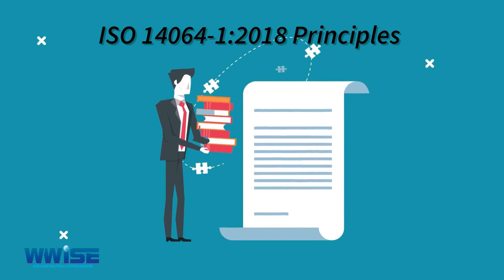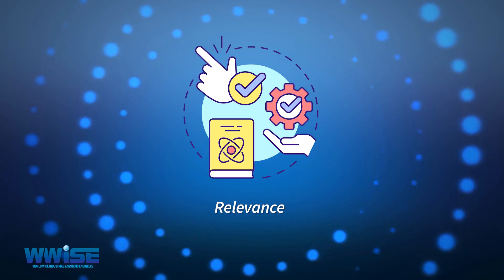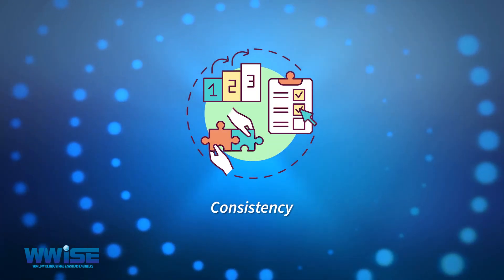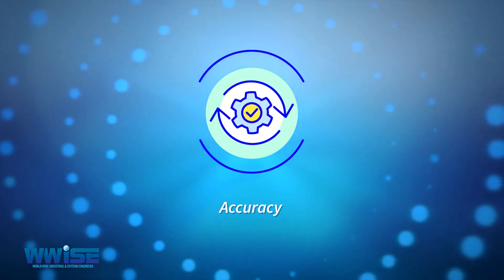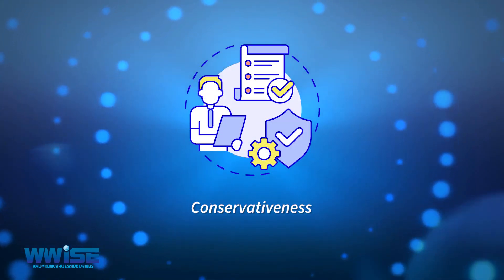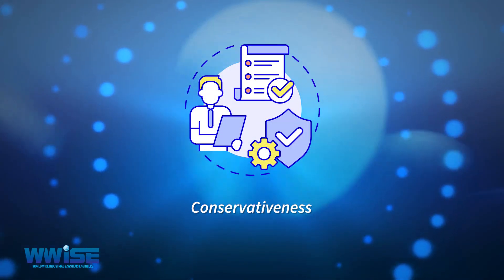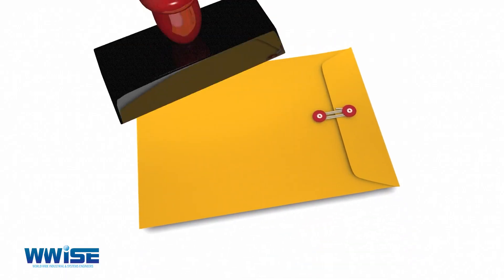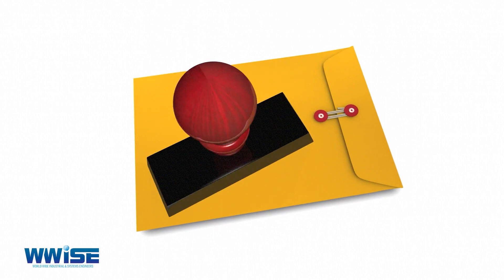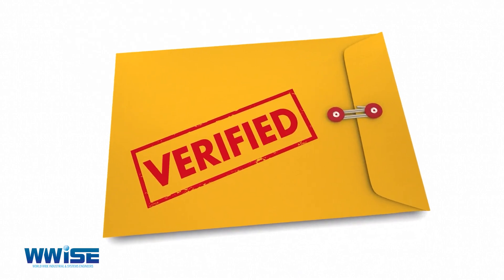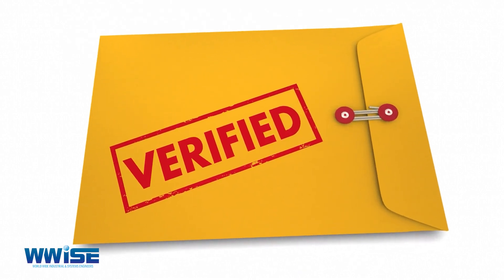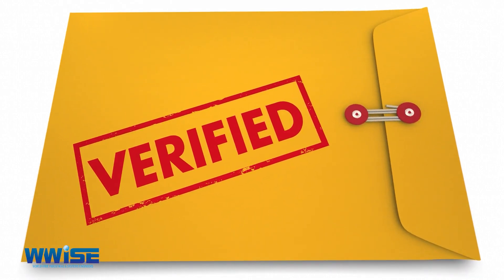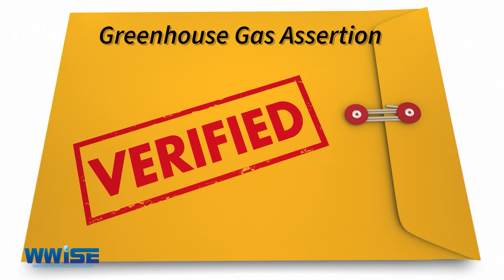These principles include relevance, competence, consistency, accuracy, transparency and conservativeness. ISO 14064 Part 1 2018 will enable your organization to be validated if you rely on greenhouse gas assertion.